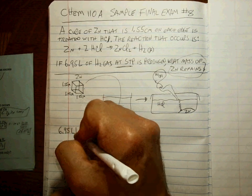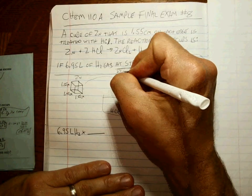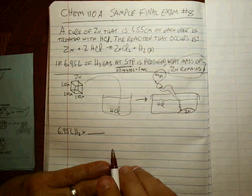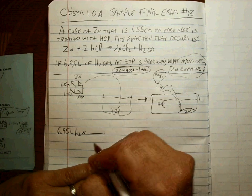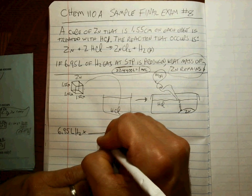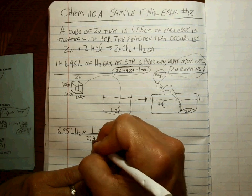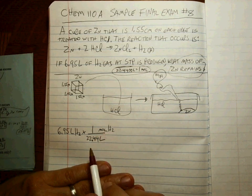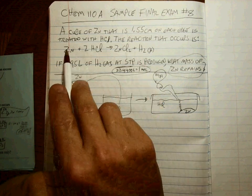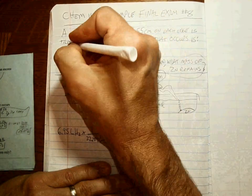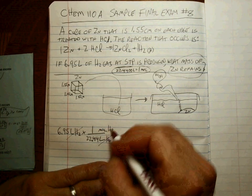Let's do that calculation first. 6.95 liters of H2 gas at STP — remember what STP means: 22.4140 liters equals one mole of a gas at STP, every time. We'll use that conversion. We want the liters on the bottom and moles on top. As always, you want to get to moles as fast as you can, because moles of H2 is related to moles of zinc based on the reaction's one-to-one-to-one-to-two ratio.